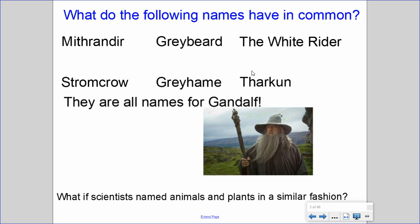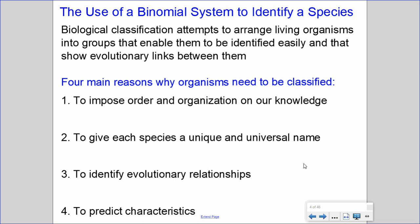If scientists named plants and animals in a similar fashion, it could certainly create confusion as well. There is a system referred to as a binomial system to help identify species. Biological classification attempts to arrange living organisms into groups that enable them to be identified easily and that show evolutionary links between them. There are four main reasons why organisms need to be classified: it helps impose order and organization on our knowledge, allows each species to be given a unique and universal name, helps identify evolutionary relationships, and helps predict characteristics to allow for identification.